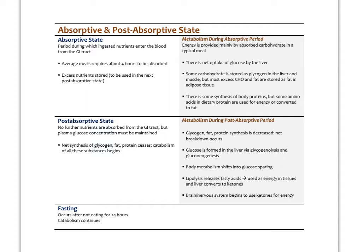The post-absorptive state is when there's no further absorption of nutrients from the GI tract, but we still need to maintain steady concentrations of glucose and amino acids in the blood. The liver is a major organ that regulates this. Synthesis of glycogen, fat, and protein ceases, and we shift to catabolism — breaking down glycogen via glycogenolysis and fat via beta-oxidation — to maintain plasma glucose.